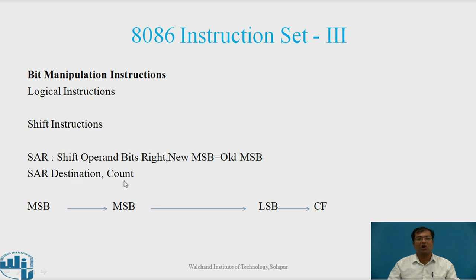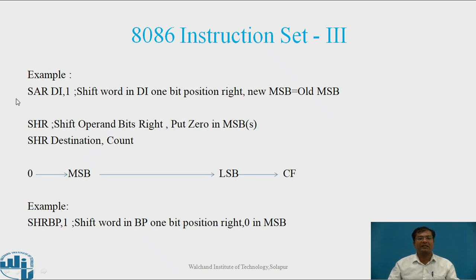The content of the destination is shifted count times. The MSB content shifts right to the next position, and at the end the LSB will be copied to CF (carry flag), and the new MSB equals the old MSB. Example: SAR DI, 1 — this shifts the word in DI one bit position right, and the new MSB equals the old MSB.